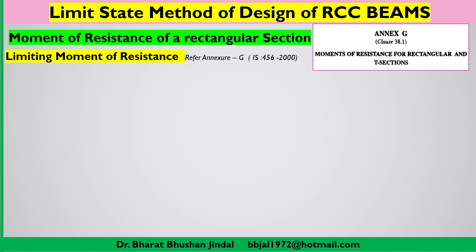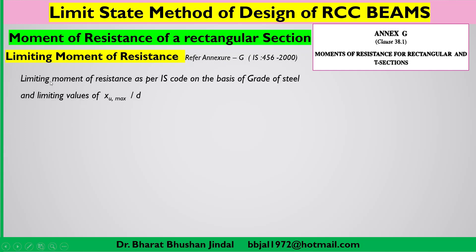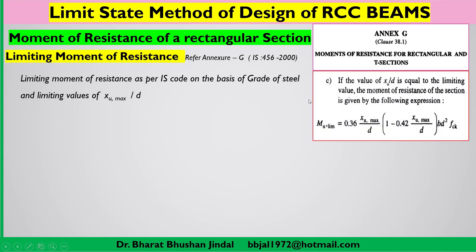According to Annex G, the limiting moment of resistance as per IS code is calculated on the basis of grade of steel and the limiting value. We can calculate xu max by d from clause G-1.1 of Annex G. If the value of xu by d is equal to the limiting value, the moment of resistance of the section can be calculated by the formula given there. From this we can make a ready-reference table for calculations.